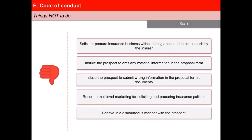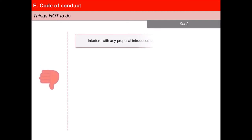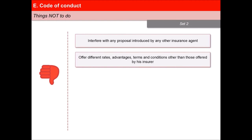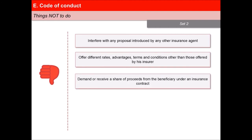The agent should not behave in a discourteous manner with the prospect, interfere with any proposal introduced by any other insurance agent, or offer different rates, advantages, terms and conditions other than those offered by his insurer, or demand or receive a share of proceeds from the beneficiary under an insurance contract.